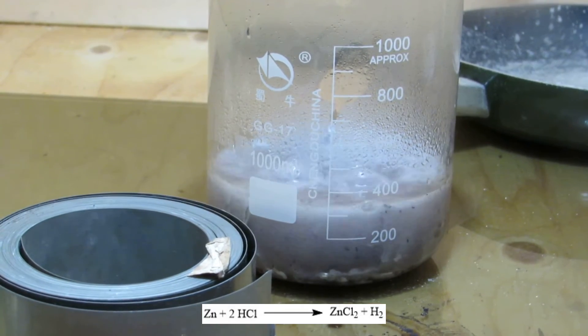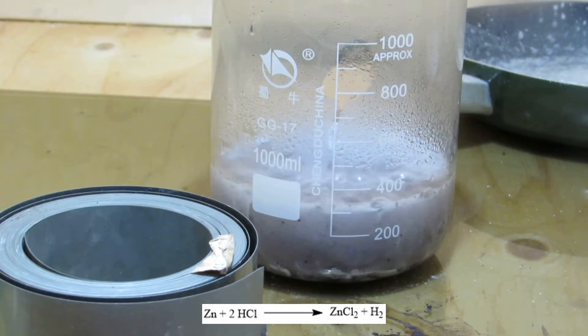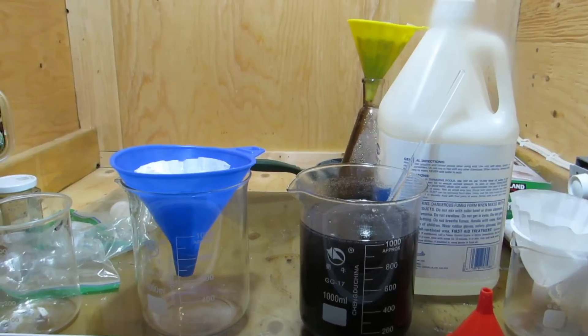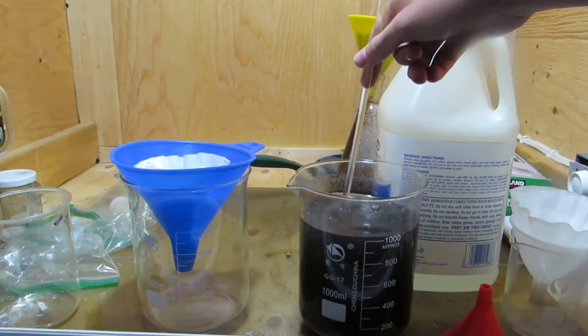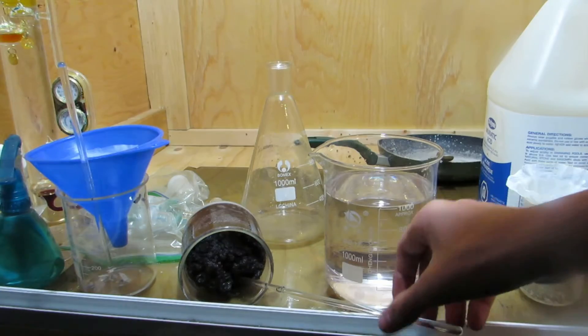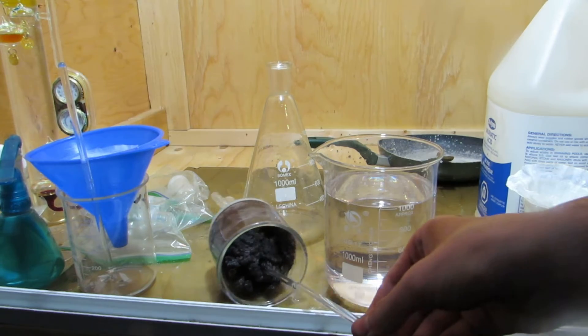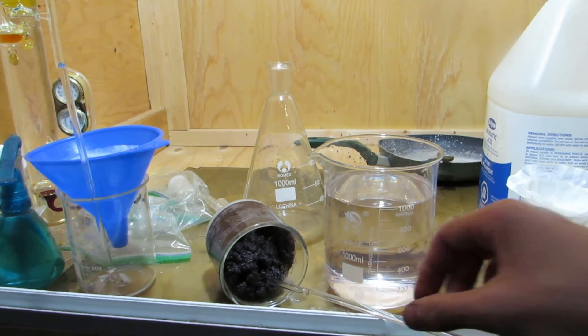The zinc can be added to a large beaker and covered with acid to dissolve the zinc to zinc chloride. Some additional acid and zinc was added during the reaction, and once it was done, it was filtered off to remove insoluble impurities. Interestingly, some unknown gelatinous goop was produced during the reaction. This is what was filtered off.